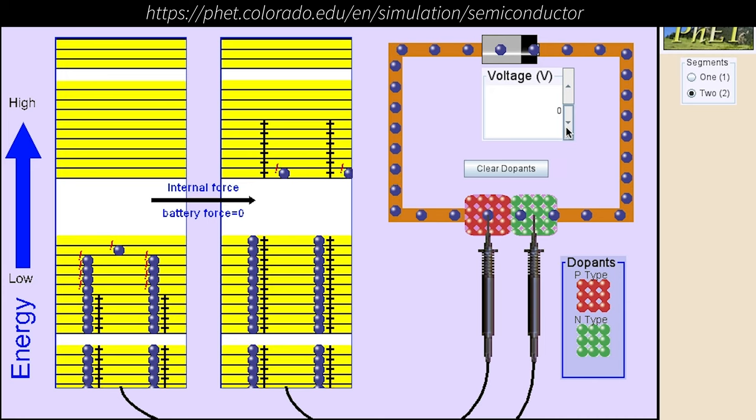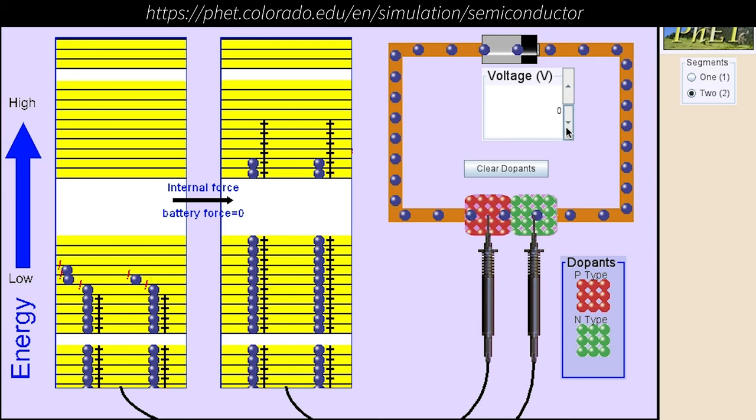It generally consists of a PN or NP junction, that is, two different types of semiconductors, one you might say underfilled and the other overfilled with electrons with a large gap between the allowed rungs up the energy ladder. And it only allows the flow of current in one direction and not the other.